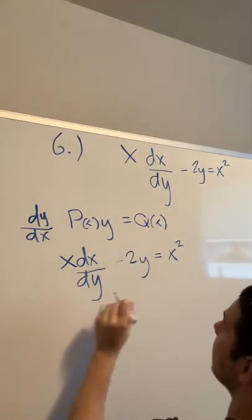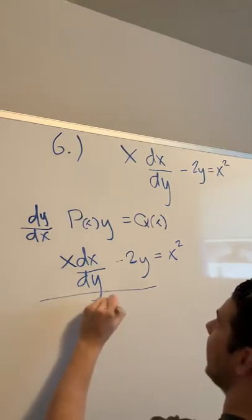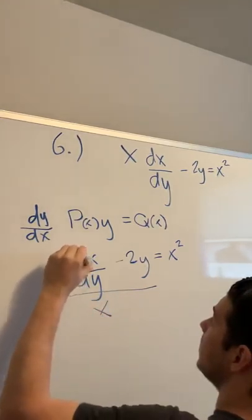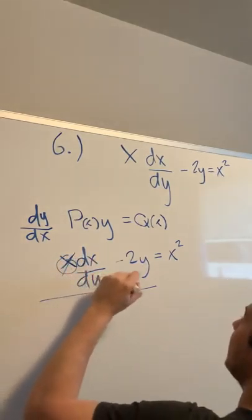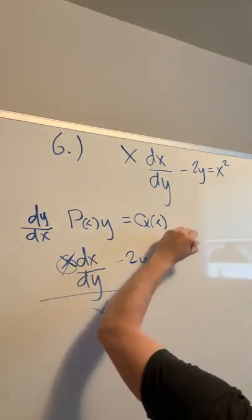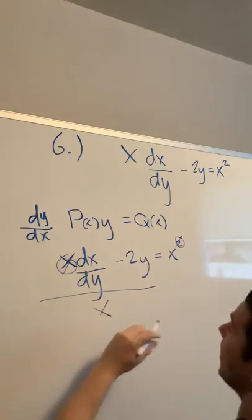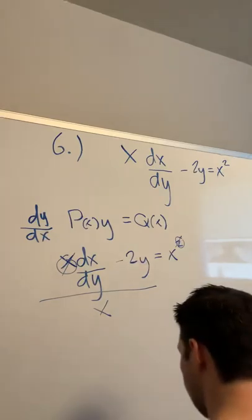We start off by dividing this side by an x, which will cancel out our x there and cancel out the square there.